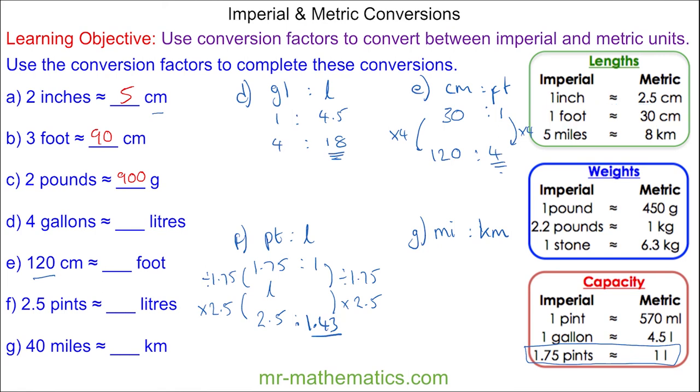And finally, for question G, we'll use this conversion between miles and kilometers, where 5 miles is 8 kilometers, and we want 40 miles, so we'll multiply both by 8, and we get 64 kilometers.